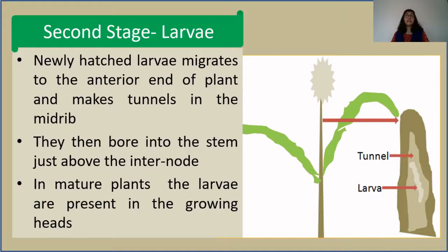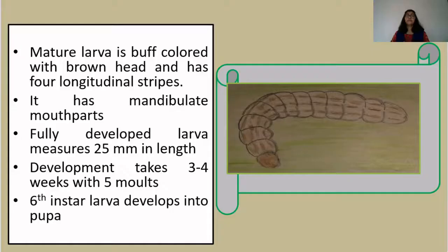The mature larva is buff colored with a brown head and has 4 longitudinal stripes on its body. It has mandibulate type mouthparts and feeds voraciously on the pith present inside the stem. The fully developed larva measures 25 mm in length. Development takes roughly 3 to 4 weeks with 5 molts, after which the 6th instar larva develops into a pupa.